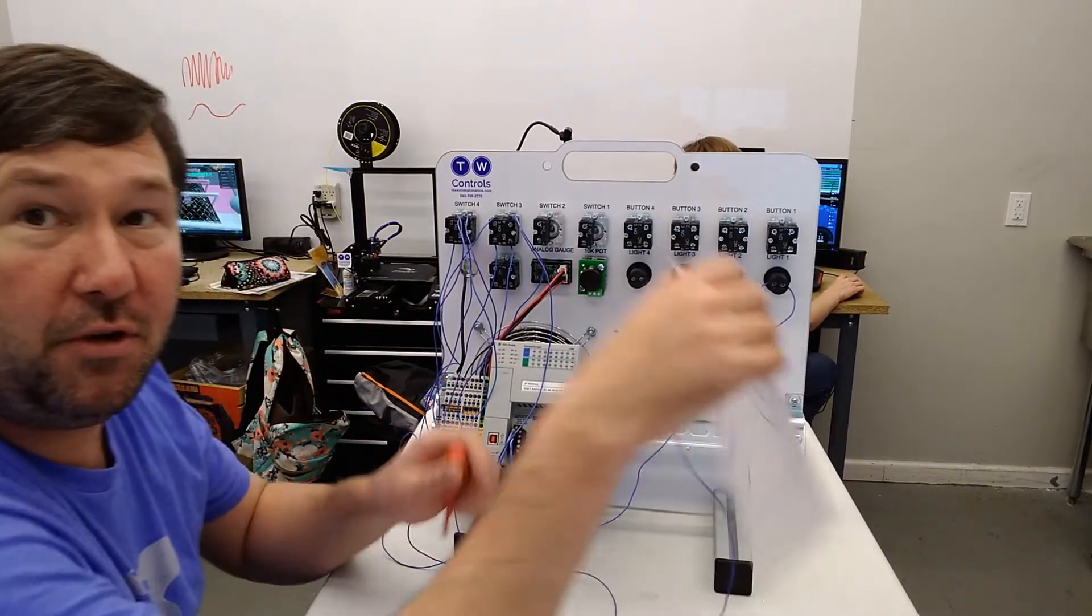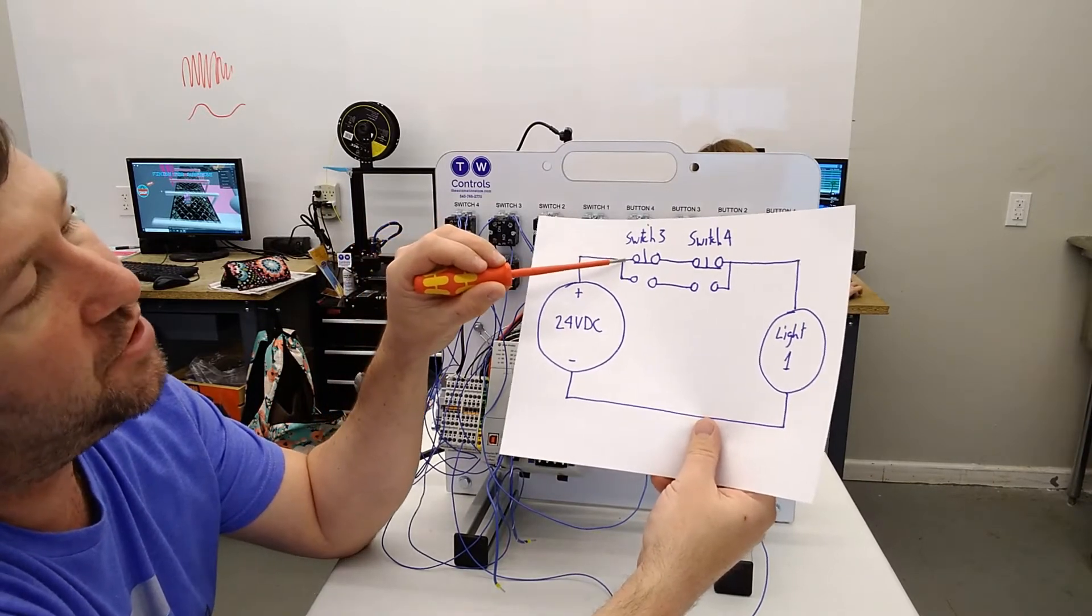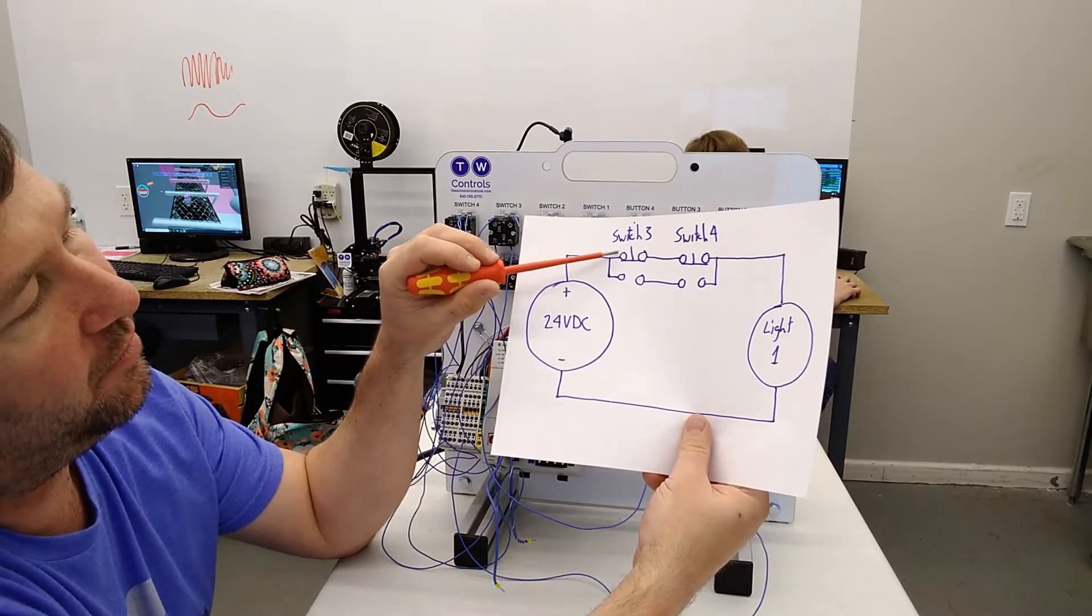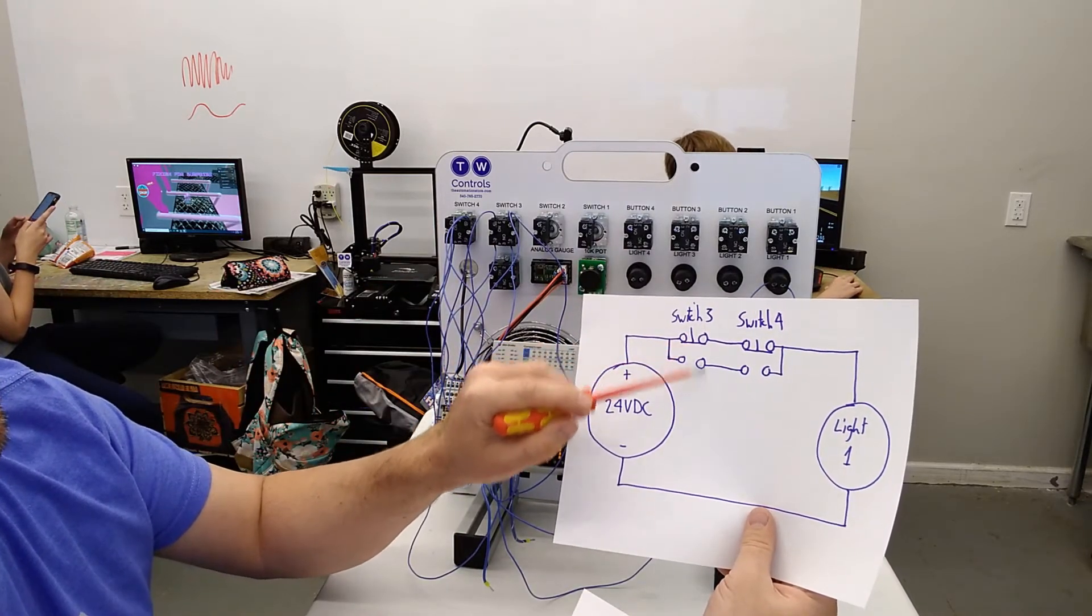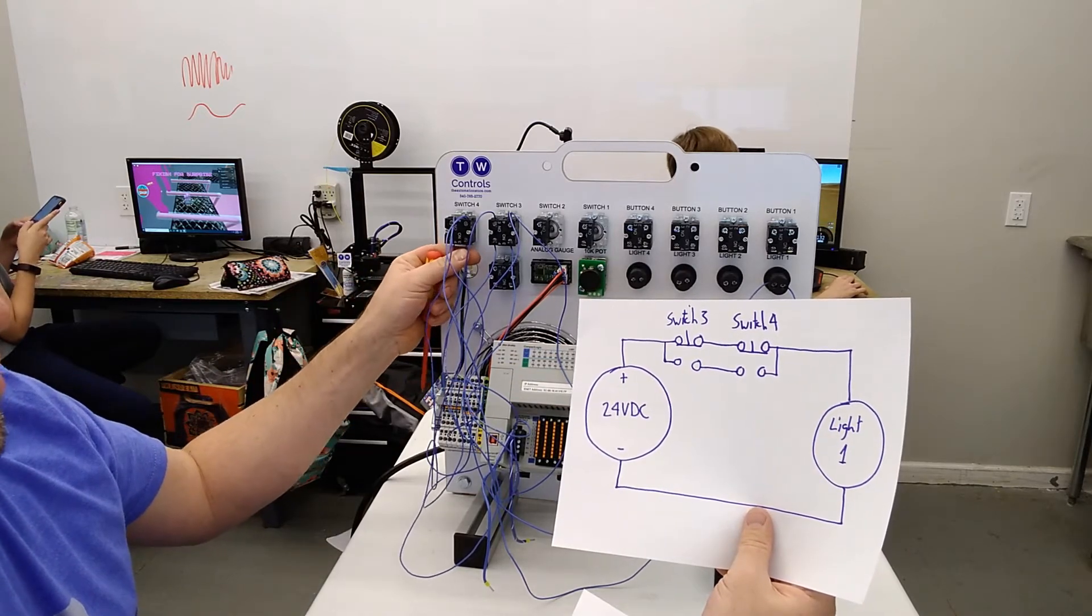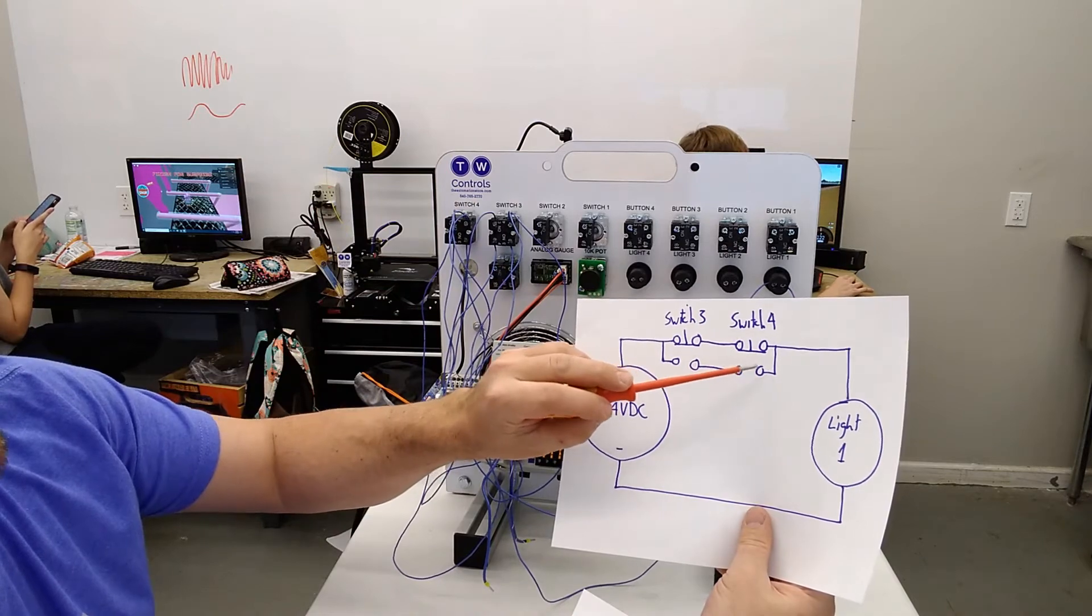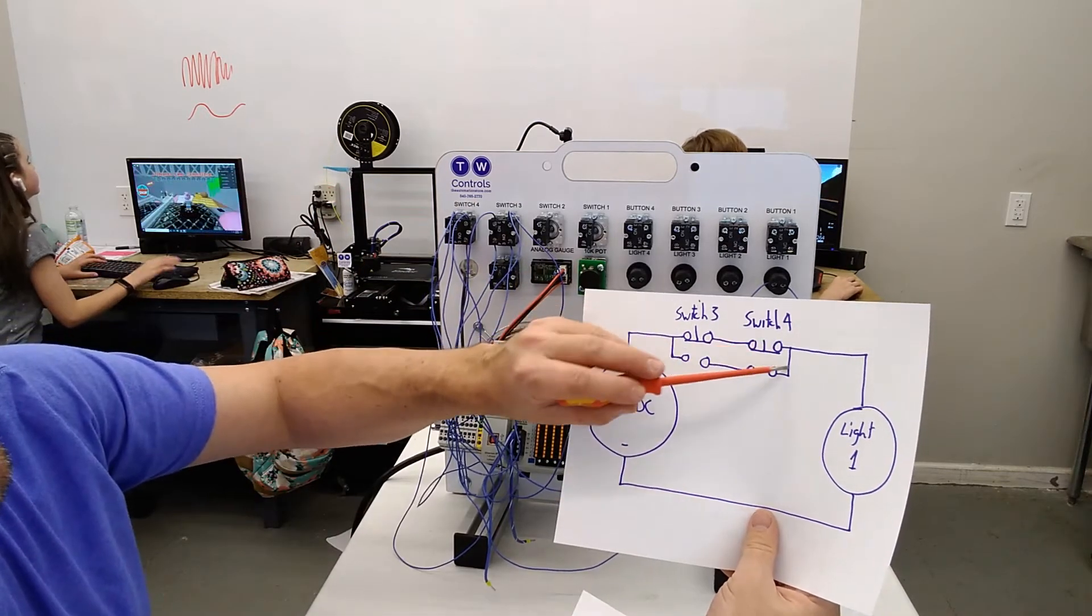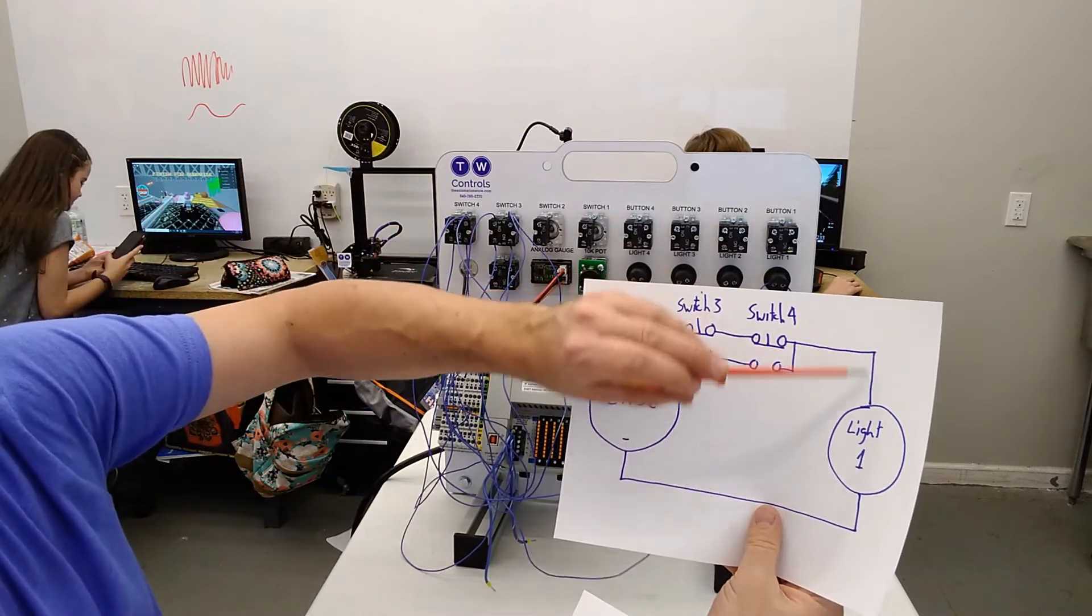Okay, so let's review what we have now. We have a wire from the plus of our power supply jumpered to the top of switch three. Then we have wires connecting the other side of switch three to the bottom side of switch four. And then we took wires, we have a jumper wire from the top side of each contact on switch four, and it's coming around to our light.